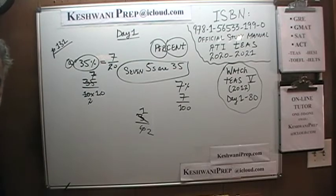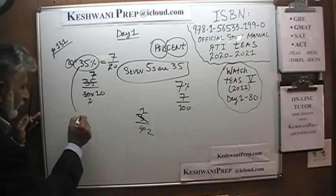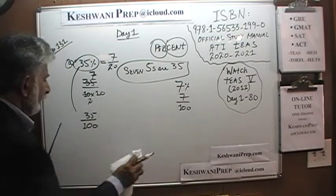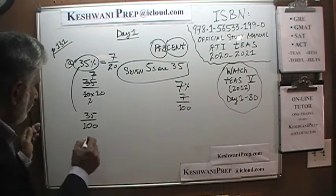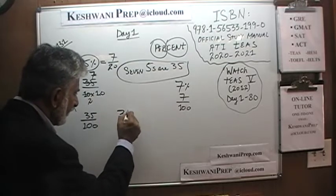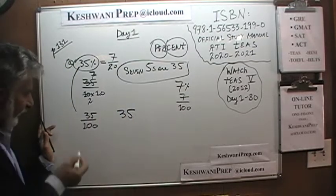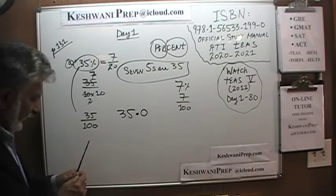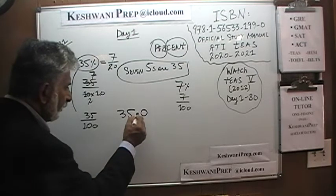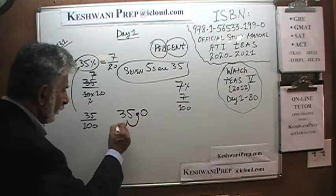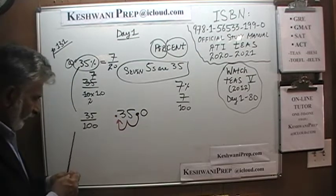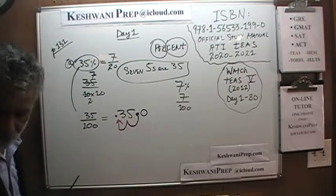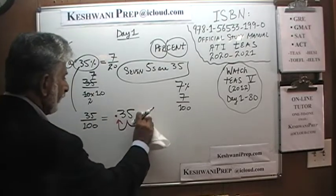If they ask us to convert 35% into decimal form, 35% is again 35 over 100. When dividing by 100, we simply move the decimal two spots to the left. Even though the decimal isn't written in 35, it is there after the 5. Move it two spots: 1, 2 — it ends up giving us 0.35. That's all it is.